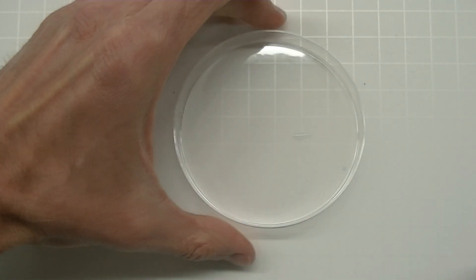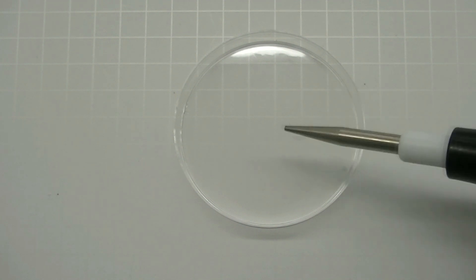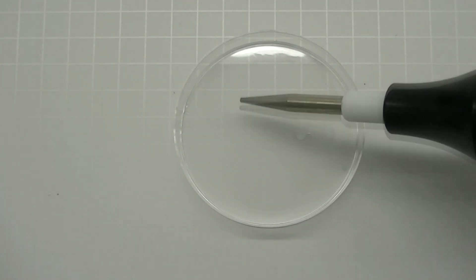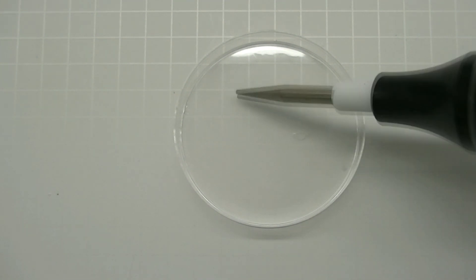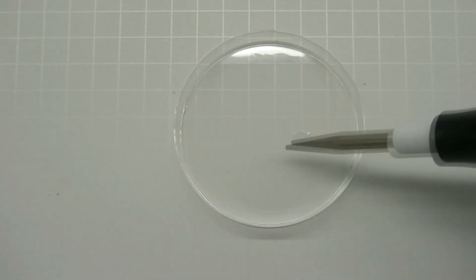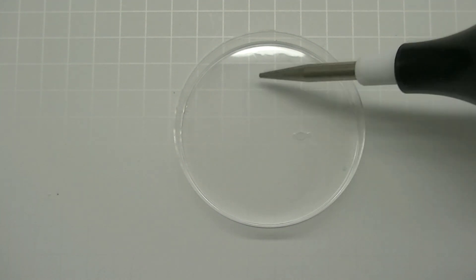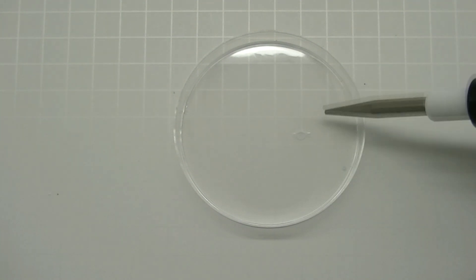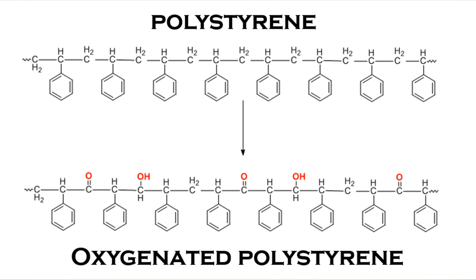Treating the dish with electric charge causes oxygen in the atmosphere to chemically react with the plastic in the dish. As a result of this reaction oxygen atoms become inserted into the chemical structure of the polystyrene. As a result the polystyrene is transformed into a molecule that is no longer a hydrocarbon because it contains oxygen atoms as well.